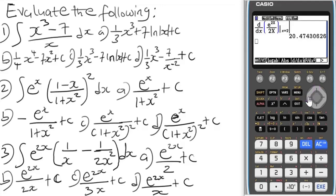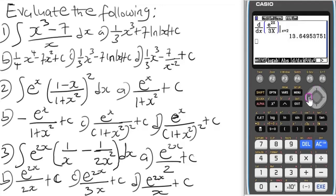Let's check Option C to verify: remove the 2 from the exponent and place it differently — press EXE — no, that doesn't give 20.47. Check Option D as well — press EXE — again not 20.47. So the answer is confirmed as Option B, which gives 20.47.